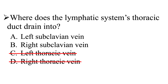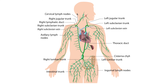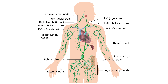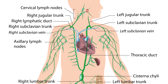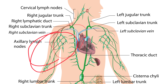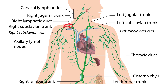Now let's take a look at the lymphatic system. Here we have the right lymphatic duct on this side and the thoracic duct on this side. We always have to remember that this is the right side of the body and this is the left side of the body — we're always looking at this in the anatomical position. The right lymphatic duct drains the right side of the head and neck, the right thorax, as well as the right arm, and it drains into the right subclavian vein.